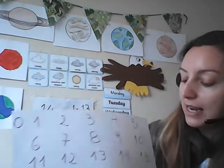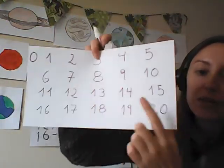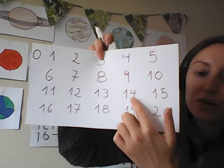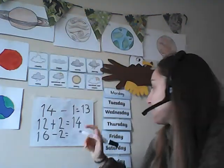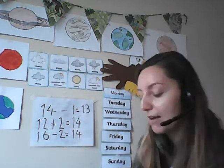So let's have a look at our number line. 16 take away 2 would be 1, 2, 14. Very good, everyone.